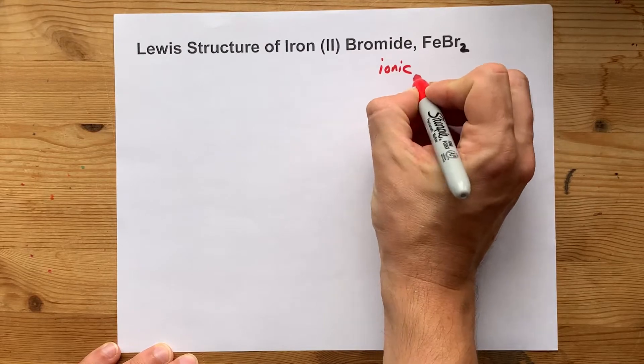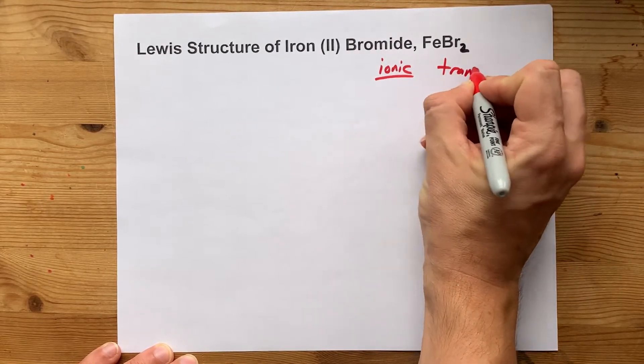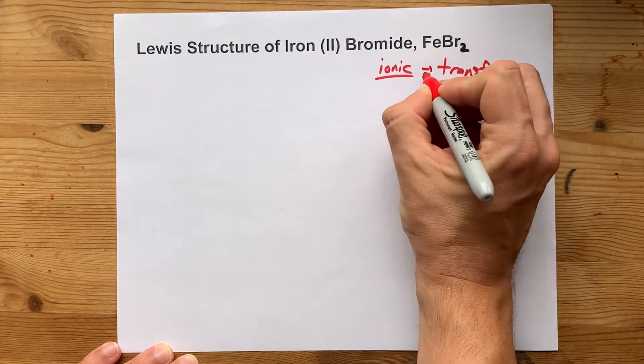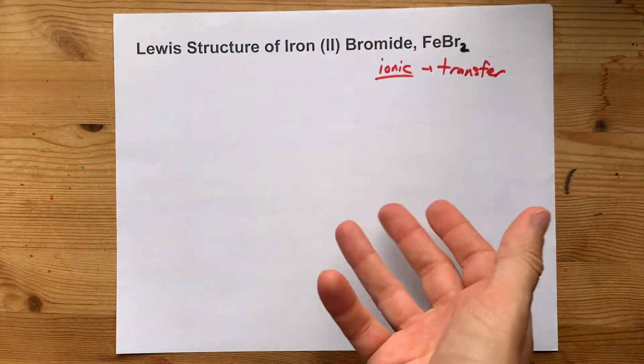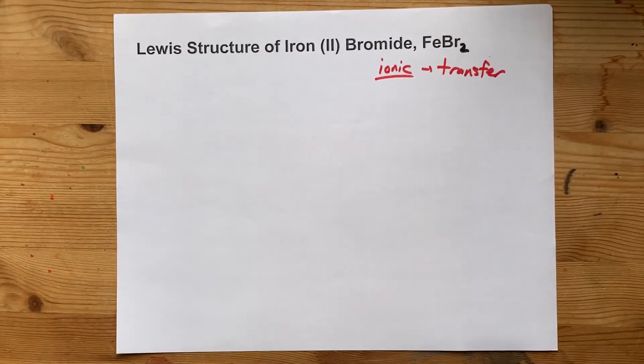When metals bond with non-metals, you get ionic bonding, which is a transfer of electrons, not a sharing of electrons like we have when non-metals bond together. That's called covalent bonding.